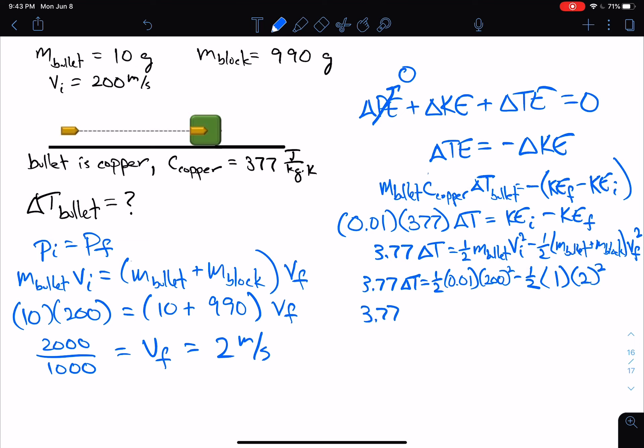So 3.77 ΔT equals, and so here we're just going to crunch these numbers real quick. And this works out to be 198. When you multiply these together, then subtract: 198, and that would actually be joules. These are energy units of joules. And then ΔT is, of course, going to be 198 divided by 3.77, and that's going to be 52.52 degrees Celsius.